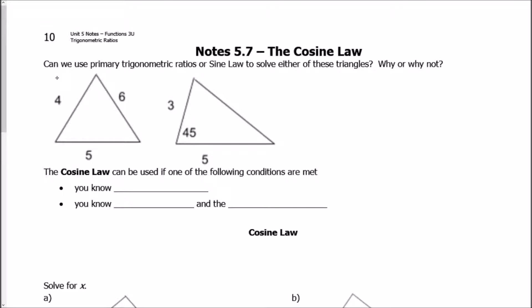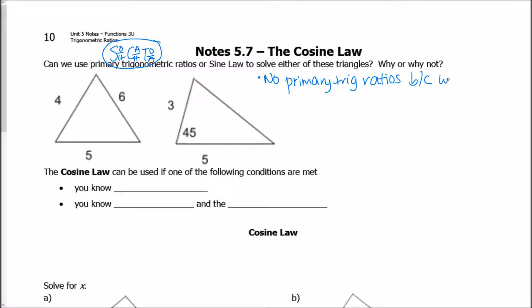The question asks: can we use primary trigonometric ratios — essentially SOH-CAH-TOA — or the sine law to solve either of these triangles, and why or why not? Here we've got sides 4, 6, 5, but this is not a right triangle. So we can't use SOH-CAH-TOA because it only works in right triangles. So no primary trig ratios because we don't have right triangles.